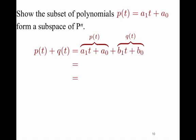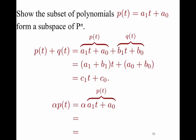Consider adding two polynomials of this type, P(T) and Q(T). You can rearrange the terms in front of the T's and the constant terms, and you get something of the form C₁T + C₀. So it too is a first degree polynomial. Now, multiplying by a scalar — say alpha — we get alpha·A₁T + alpha·A₀. You can let alpha·A₁ equal C₁ and alpha·A₀ equal C₀, and again it's a polynomial of the same form. Therefore, we've shown that the subset of polynomials P(T) = A₁T + A₀ does form a subspace of Pₙ.